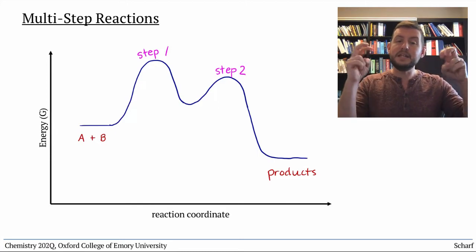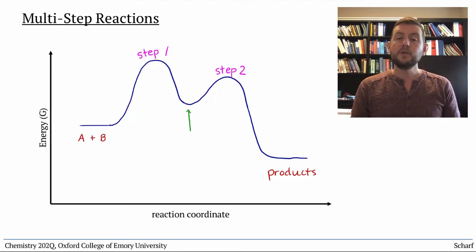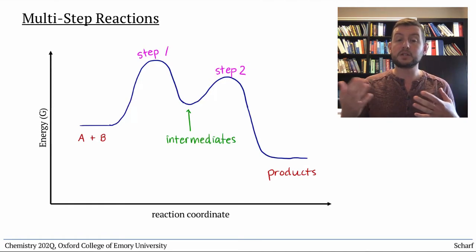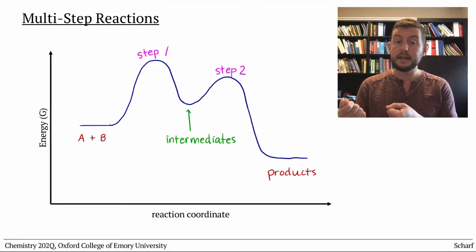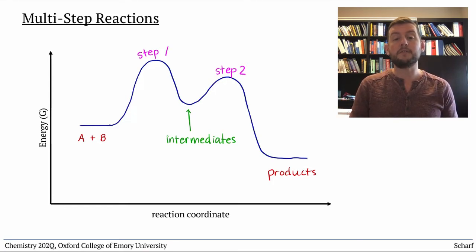And the dips in the reaction coordinate represent intermediates, molecules that are formed sometime between the starting materials first colliding, and the products eventually being formed.